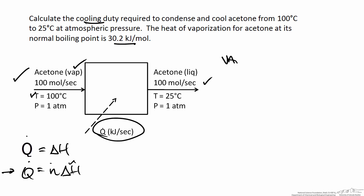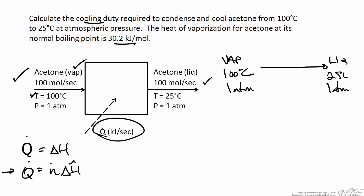We are going from acetone vapor at 100°C and atmospheric pressure to the liquid phase at 25°C, keeping pressure constant at one atmosphere. Our overall change in enthalpy for the process is delta H, and we can set up any number of hypothetical steps to get from the same initial to final condition. A key piece of information is what temperature the phase change occurs at. We have the heat of vaporization at the normal boiling point, and the normal boiling point for acetone is 56°C, which we can look up in various textbooks or chemical engineering handbooks.